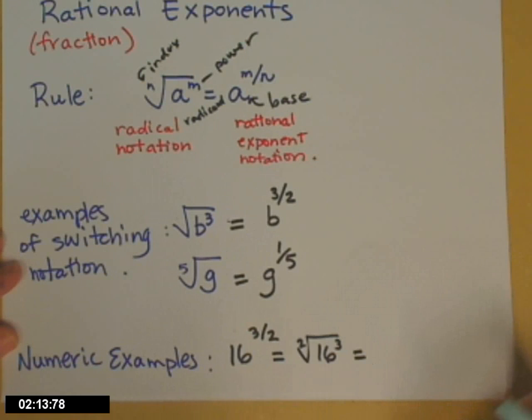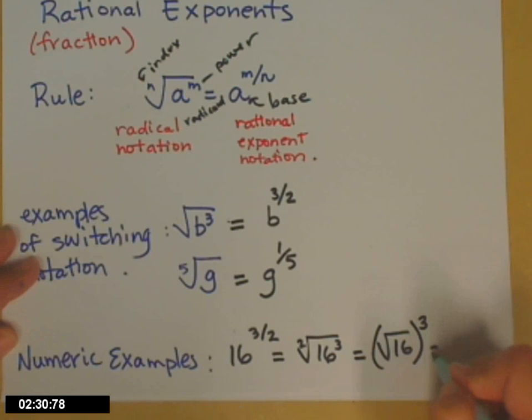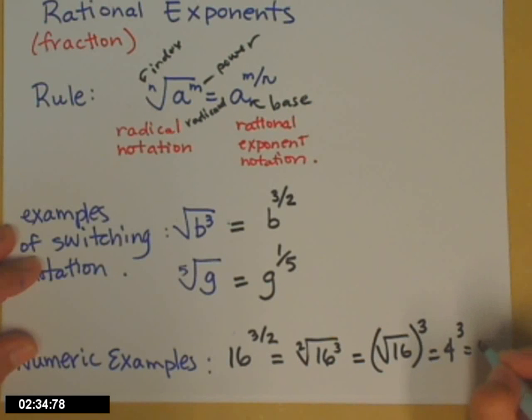Now, 16 cubed, I don't know how to figure that without a calculator. So instead, what I'm going to do is switch the order of my powers. And I'm going to do the square root of 16 first, and then cube that answer, because that I can do in my head. So the square root of 16 is 4, and 4 cubed is 64, for my final answer.